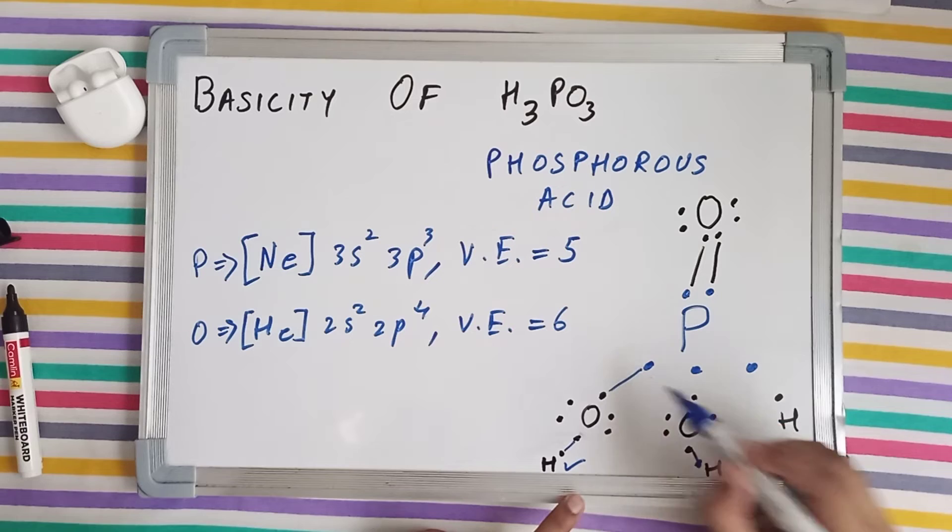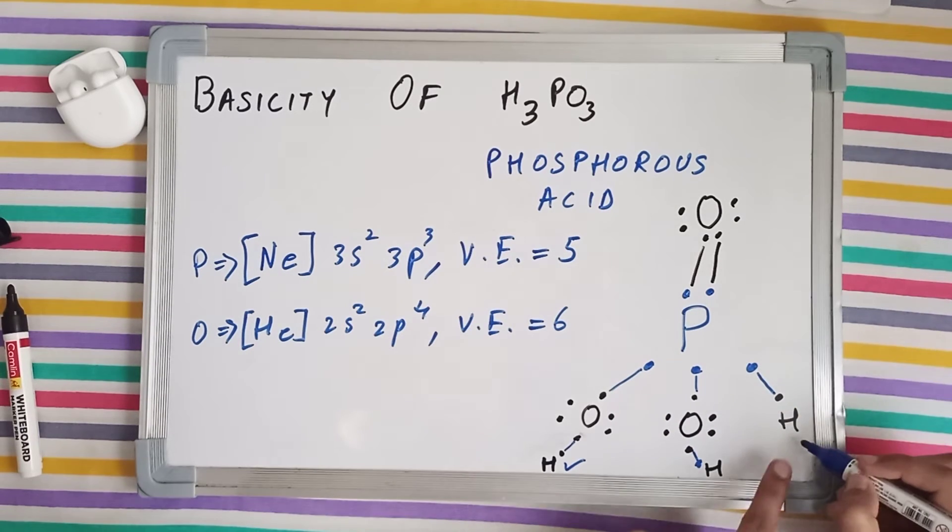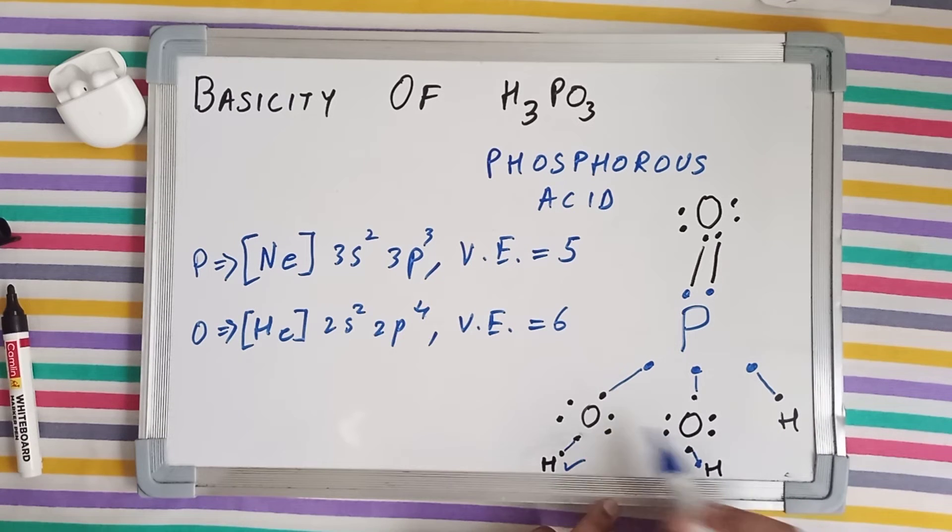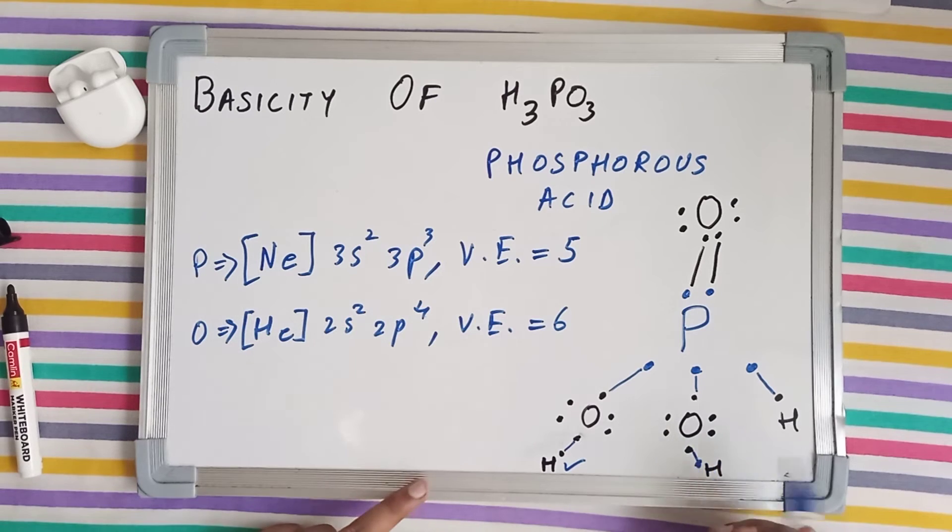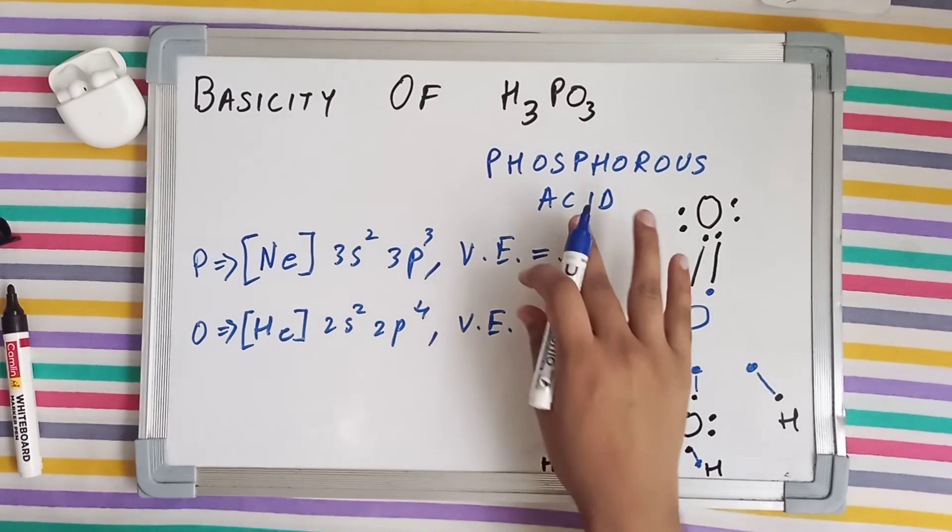As shown here, so it is going to make a single bond with phosphorus. Now hydrogen here has completed its duplet and these two oxygens have completed their octet. Now how to calculate the basicity?